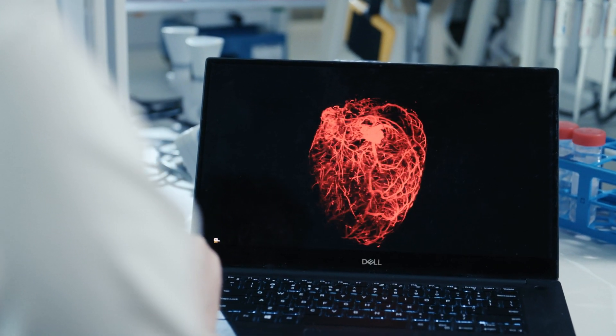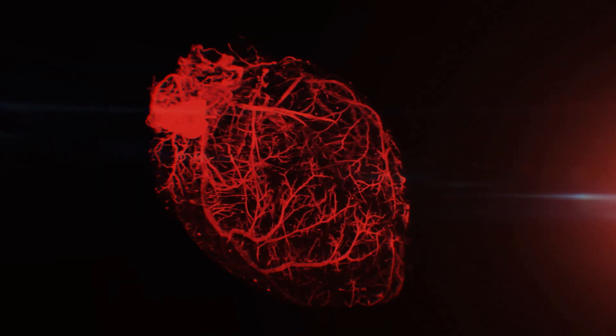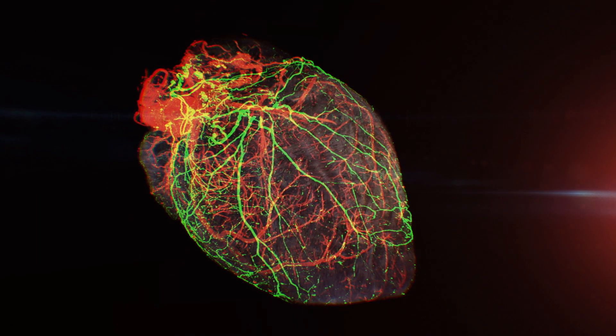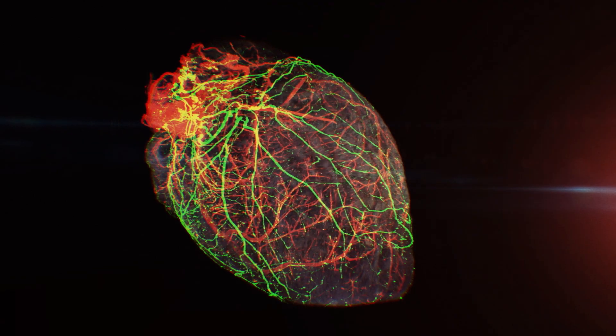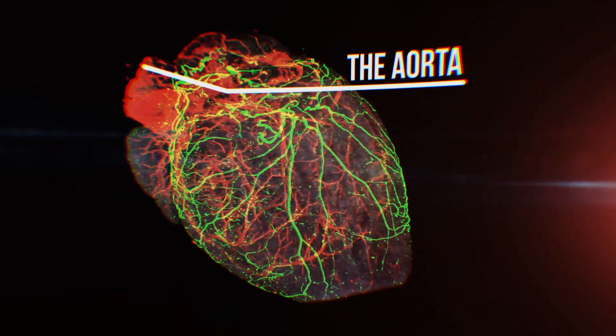In the coronary arteries, here visualized in red together with an extensive network of nerves shown in green, this extensive network of blood vessels originates from the aorta that supplies the heart muscle with oxygen and energy.